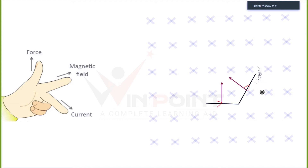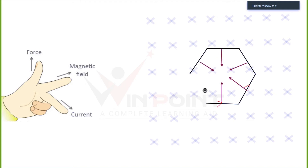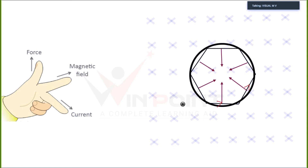The next movement will be like this. Again there will be force, and the particle will take a turn. Again there will be force, again it will take a turn. If these line segments are made very small — considering very small particle movements — we can consider this as a circle. So a charge in a uniform magnetic field, if entering into the magnetic field, will follow a circular path and possess circular motion.